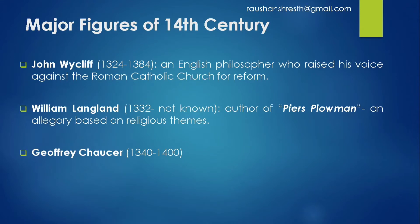Now we will see the major figures of the 14th century. The first is John Wycliffe, an English philosopher who had his own point of view regarding the Roman Catholic Church. The second figure is William Langland, a major writer of the 14th century, whose famous work is Piers Plowman, which is an allegory.